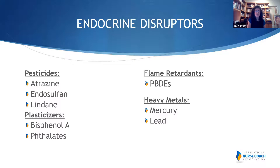Heavy metals are also estrogen disruptors, as are plasticizers — our favorite nail polish contains phthalates, which all have potential to impact us. The key coaching question is: how do we, as nurse coaches, educators, and advocates, help people start to cut back and keep a journal on what products they're using? There are many websites where you can look at products and see what you might want to change out for a healthier alternative.